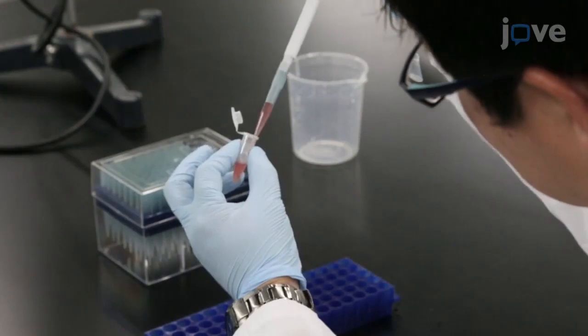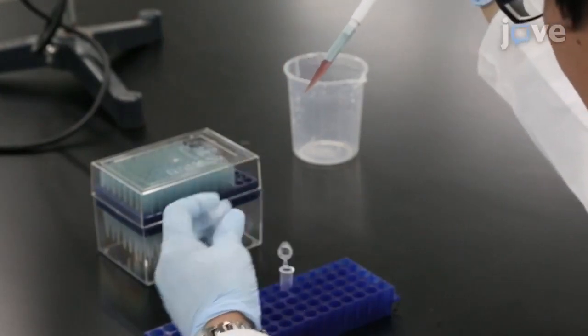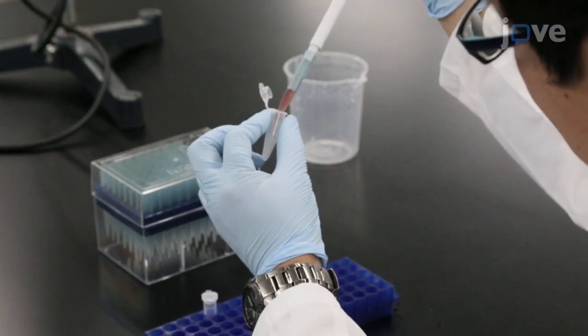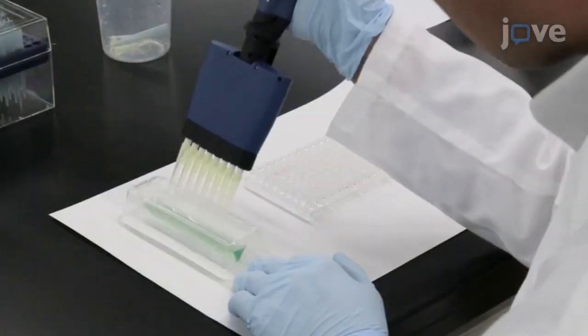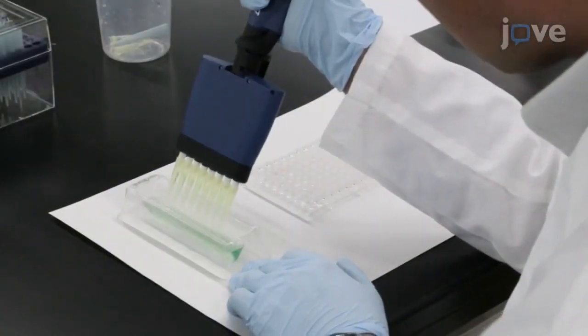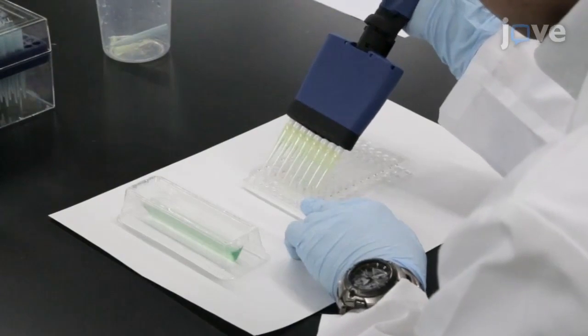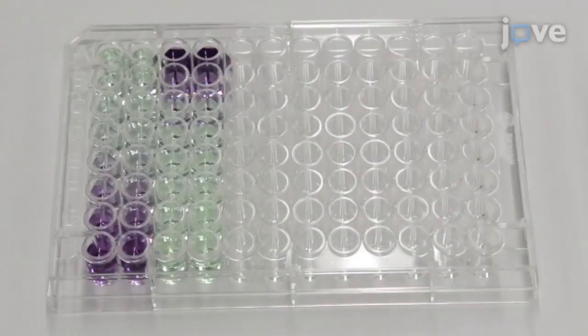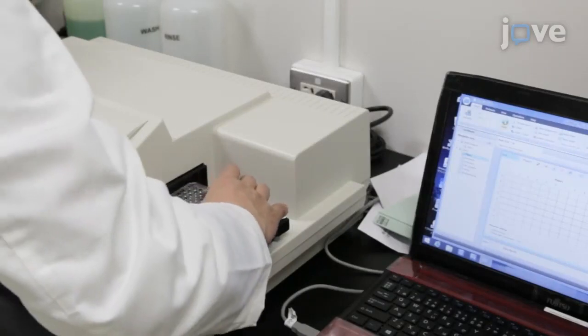Transfer 500 microliters of the supernatant to a new 1.5 milliliter plastic tube. Use 10 microliters of the sample to determine the protein concentration using methods such as the bicinchoninic acid assay or the Bradford assay.